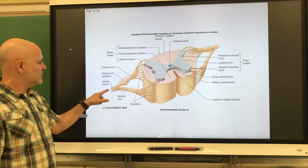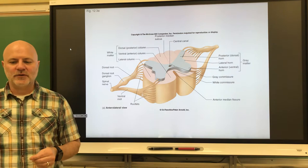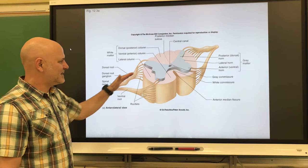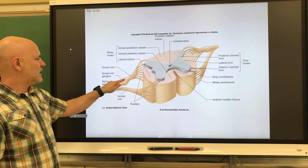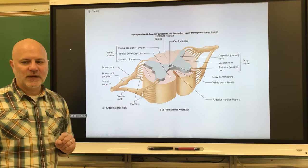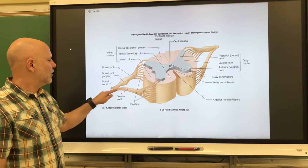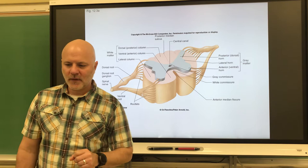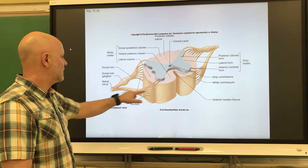One of these branches is the dorsal root, which conducts impulses from the peripheral nervous system to the spinal cord — that's sensory information going in that direction. Those sensory neurons have their cell bodies within the dorsal root ganglia. The ventral root conducts motor impulses in the opposite direction — from the spinal cord to the peripheral nervous system.